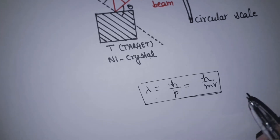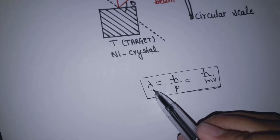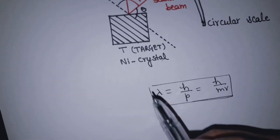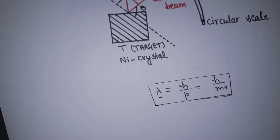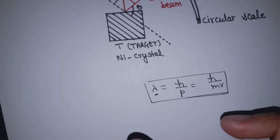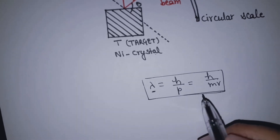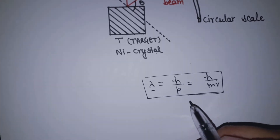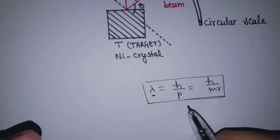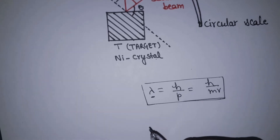In this experiment, we will show the electron as a matter particle. The electron as a matter particle will be associated with a wavelength. We have to prove that the electron behaves as a wave. If it shows interference or diffraction patterns, we can say that it behaves as a wave.